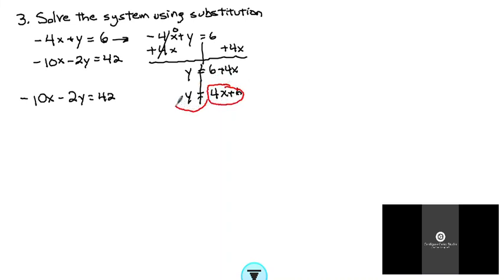And I'm going to basically substitute that in for the y in the second equation. So now I have negative 10x minus 2 times parentheses, 4x plus 6 equals 42.